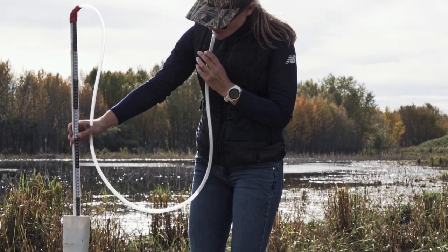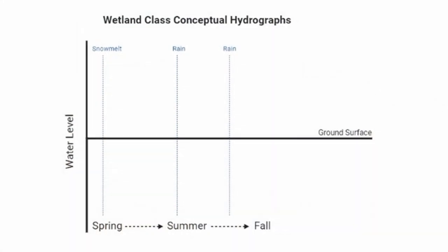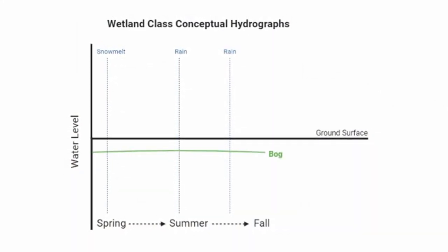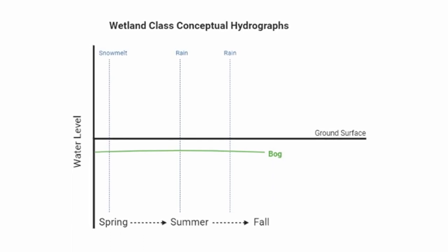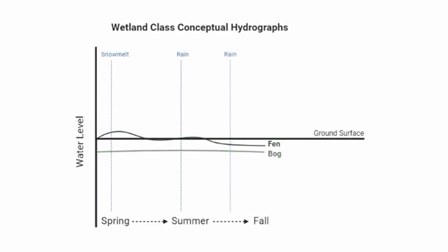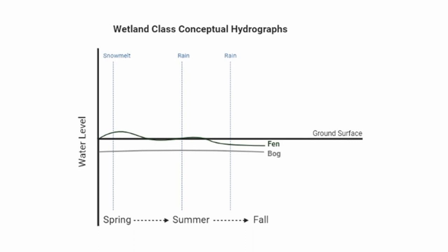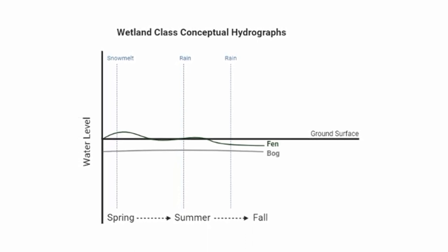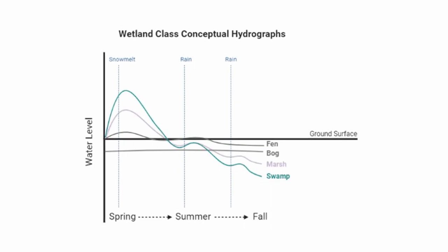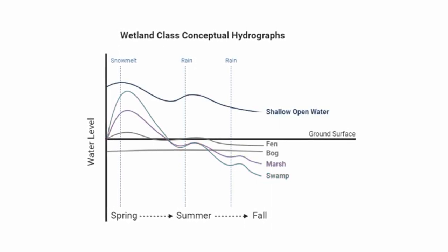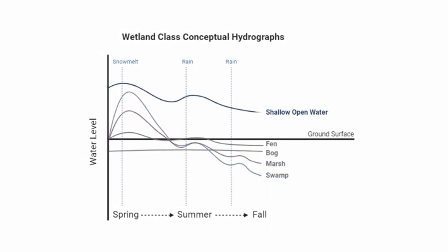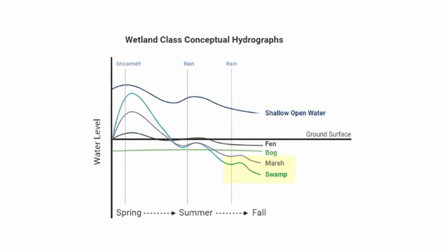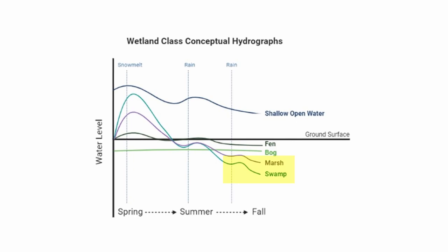The resulting data is plotted on a wetland hydrograph, which illustrates how each wetland class has a different seasonal water level regime. Peatland bogs and fens experience little water level fluctuation, with a consistently high water table residing just below or at the peat surface. In swamps, marshes and some shallow open water wetlands, the water level fluctuates considerably over the growing season, producing a flashier hydrograph. Temporary and seasonal systems will typically be dry by mid-summer.